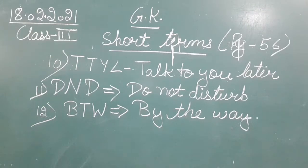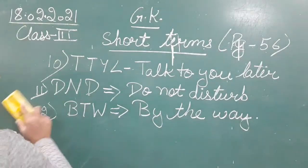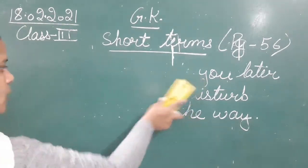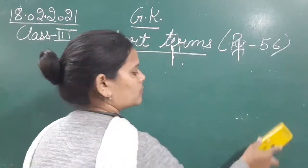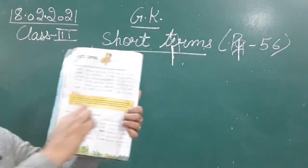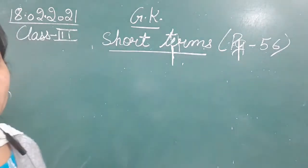The twelfth, the last one from part A, is B-T-W. The full form of B-T-W is 'By The Way'. So BTW means by the way. The answers from ten to twelve: TTYL is 'Talk To You Later', DND is 'Do Not Disturb', and BTW is 'By The Way'. Clear?